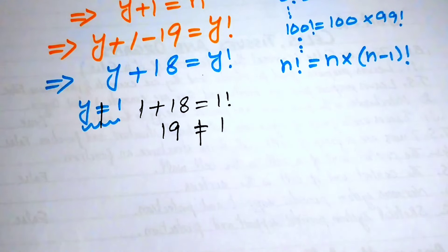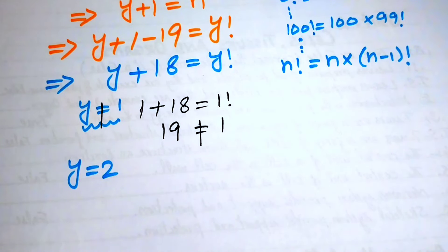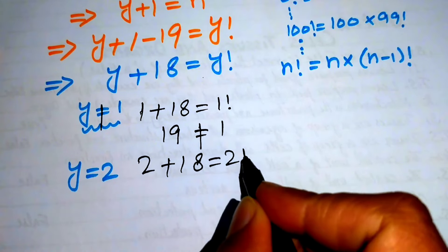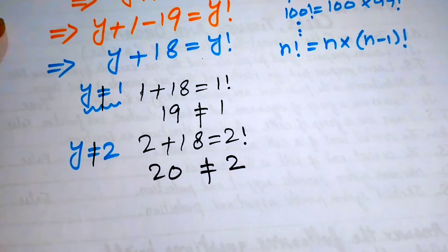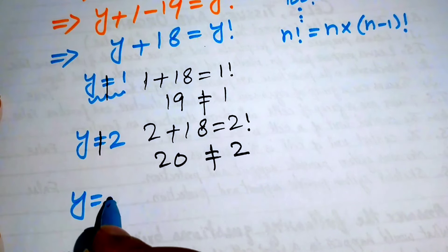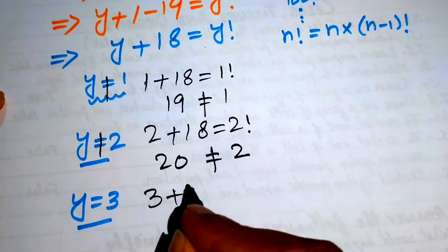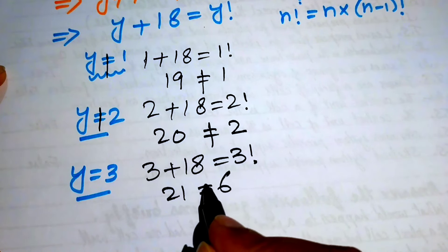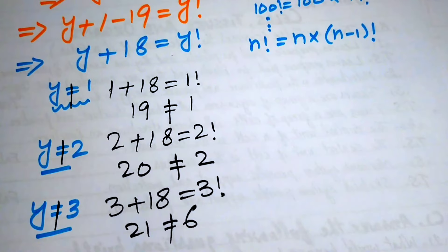Now we try y equals 2: we get 2 plus 18 equals 2 factorial, which gives 20 equals 2. That is not possible, so y equals 2 does not work. Then we try y equals 3: we get 3 plus 18 equals 3 factorial, which gives 21 equals 6. That is also not possible, so y equals 3 does not work.